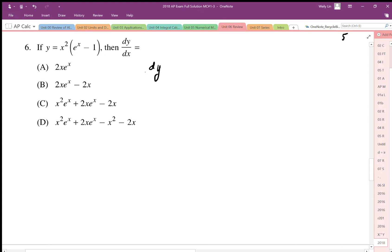So our dy/dx is equal to, we take the derivative of the x squared, leave the e to the x minus one alone, plus x squared, and the derivative of e to the x is e to the x, derivative of minus one is just zero. So there's our derivative, we need to simplify this.